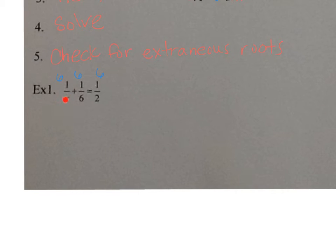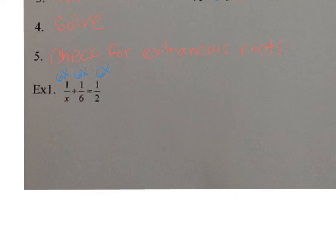So how do I get rid of the x? Think about what you need up top so you can get rid of the x. You're going to need an x. So if you multiply one by x, you've got to multiply all of them by x - whatever you multiply one by, you've got to multiply all of them by. Now we're going to reduce. x and x reduce. So I'm left with 6 times 1 is 6. 6 and 6 reduce, so I'm left with plus 1x equals - 2 and 6 reduce to 3 and 1 - so I'm left with 3x. See how I got rid of all the denominators?